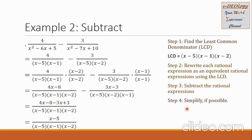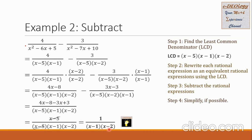Step 4: simplify if possible. We observe (x − 5) appears in both the numerator and the denominator, so we can cancel it. The remaining terms give 1 in the numerator, all over (x − 1)(x − 2) in the denominator. This is our final answer.